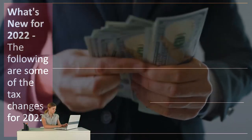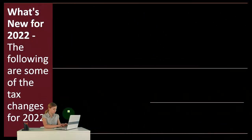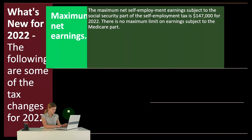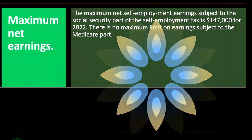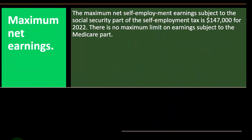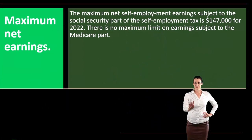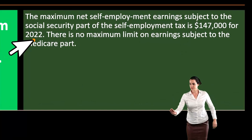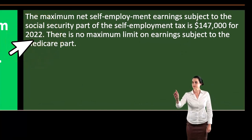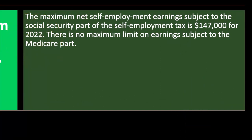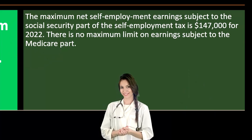So what's new for 2022? The following are some of the tax changes for 2022. The maximum net self-employment earnings subject to the social security part of self-employment tax is $147,000 for 2022. There is no maximum limit on earnings subject to the Medicare part.